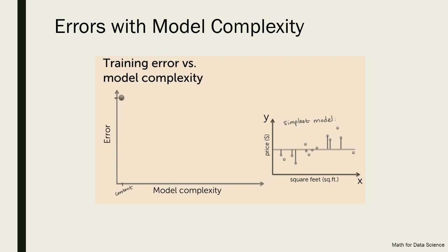Now, let's look at the training set only. You'll have some error value. We're making a graph of error versus model complexity. In the initial model — a straight line parallel to the x-axis — the model complexity is approximately zero and the error is very high. As we increase the complexity a little, it becomes a linear model covering more data points and the error decreases.